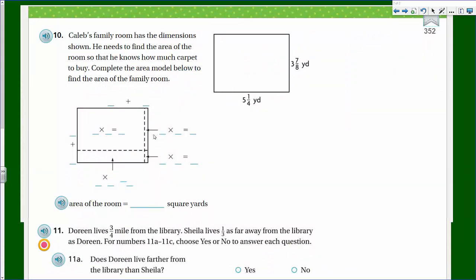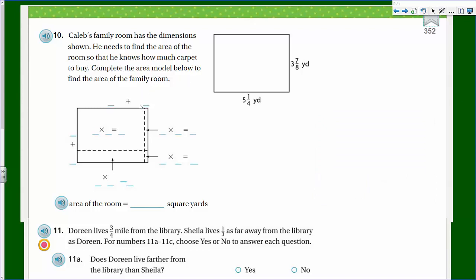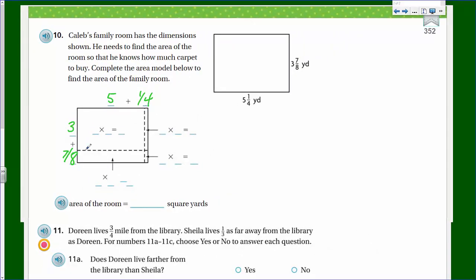Question 10: Caleb's family room has dimensions five and a quarter yards by three and seven-eighths yards. He needs to find the area so he knows how much carpet to buy. Complete the area model to find the area. So we have three and seven-eighths as the width, which is three plus seven-eighths, and five and a quarter as the other dimension, which is five plus one-quarter. Now we fill in the area model sections.